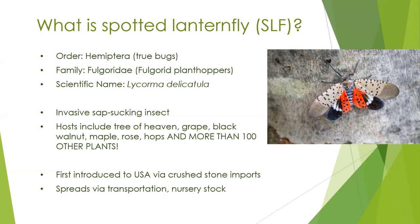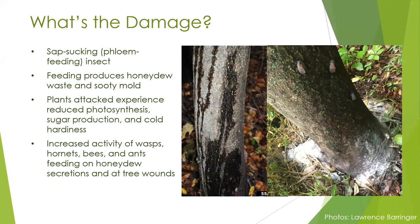It's not that picky when it's trying to feed, unfortunately for us. If all it attacked was tree of heaven, we might not have much of an issue because tree of heaven is itself an invasive species, but unfortunately it attacks a lot of crop plants, trees, vines, and herbaceous plants in our gardens and forests. Spotted lanternfly was first introduced to the USA via crushed stone imports and since then has spread via the transportation industry — rail, trucking, and sometimes through nursery stock.